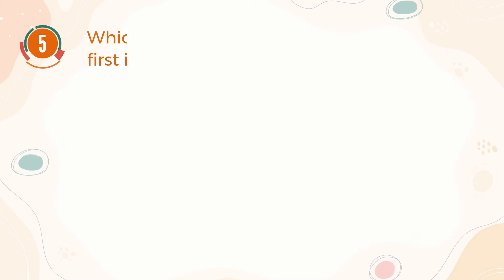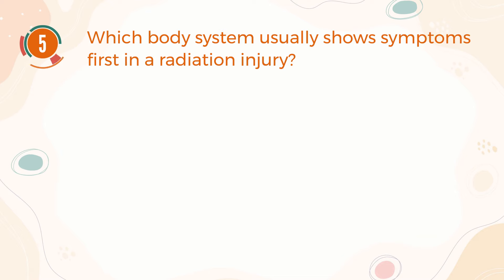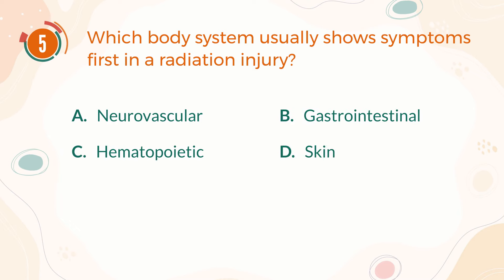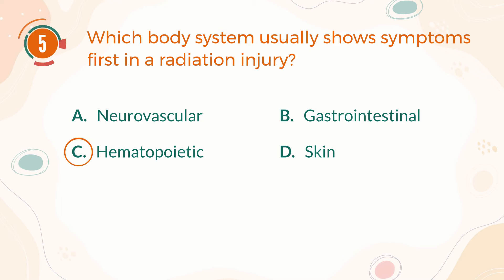Number 5. Which body system usually shows symptoms first in a radiation injury? A, neurovascular. B, gastrointestinal. C, hematopoietic. D, skin. The correct answer is C, hematopoietic.